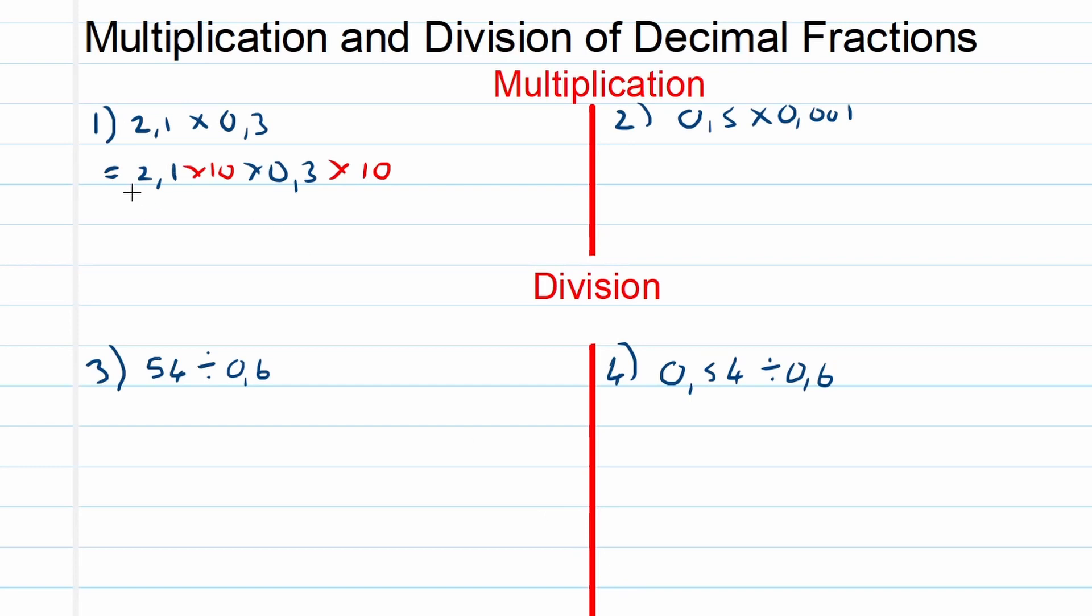For instance, 2.1 times 10 is 21; 2.1 times 100 is 210. But your question should be, can we do this? Is this allowed in mathematics? We can if it's equal to one. So in other words, if we also add a 10 times 10 as a denominator. You can see 2.1 times 10 over 10 is still 2.1; 0.3 times 10 over 10 is still 0.3. This ensures that we still have the same value.